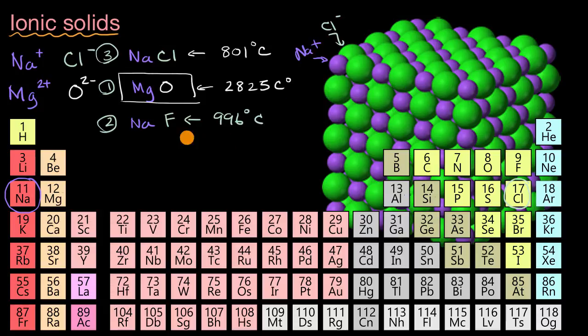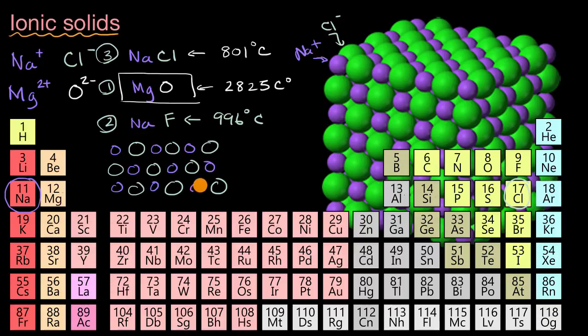And to understand that, let me draw a two-dimensional representation of this. So let me draw the chlorine, or I should say the chloride anions. And this is just a two-dimensional version of that lattice, obviously not drawing it to scale. And then let me draw the sodiums, sodium cations. As you can see, the positives are attracted to the negative, that's why they're next to each other, the negatives aren't next to each other because they repel each other, the positives aren't next to each other.